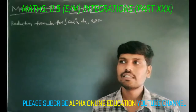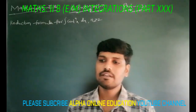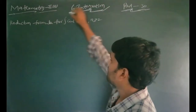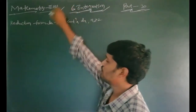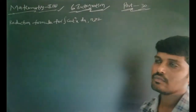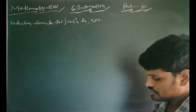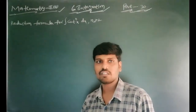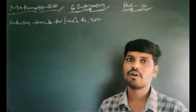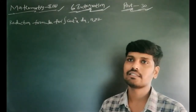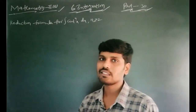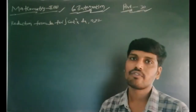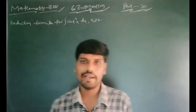Hello everybody. Today we discuss about the topic, once again, integration, Mathematics 2B, Part 30. Last class we completed the reduction formula for sine^n and cos^n dx. Today's class we discuss the reduction formula of cot^n x dx.